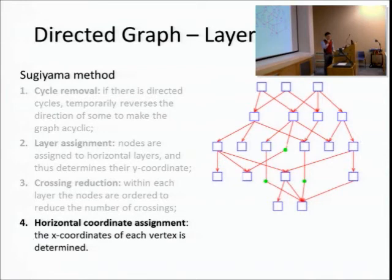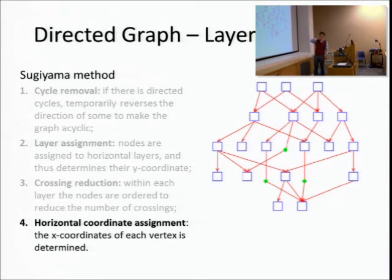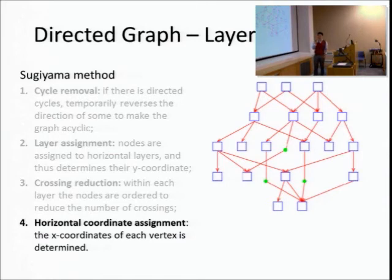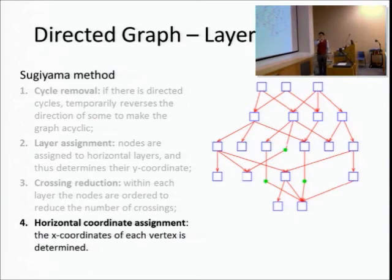To show how difficult this problem is: in the crossing minimization step, even if you fix the order of one layer and only change the order of the other layer, that's already an NP-hard problem - the number of combinations you have to try is exponential to the number of nodes. Most problems in each of the four steps are actually NP-complete or NP-hard, so there's no attempt to do a global optimization across all four steps - they have to be solved one step at a time.